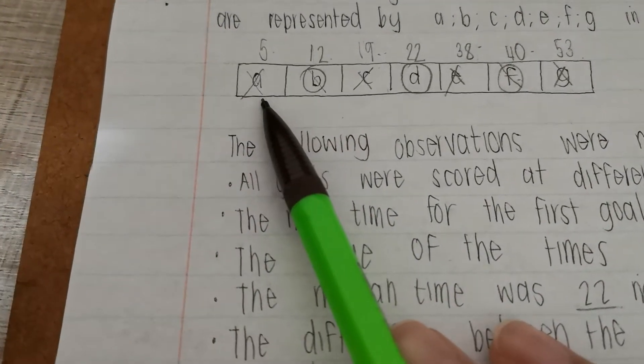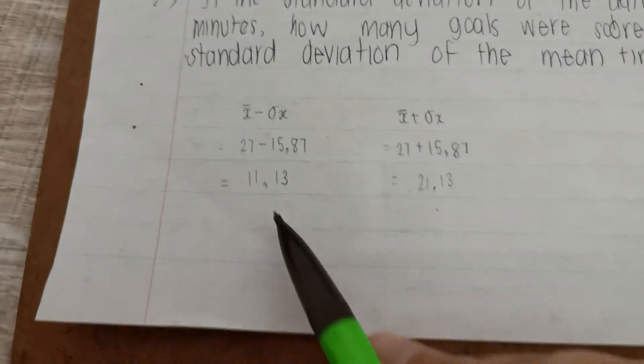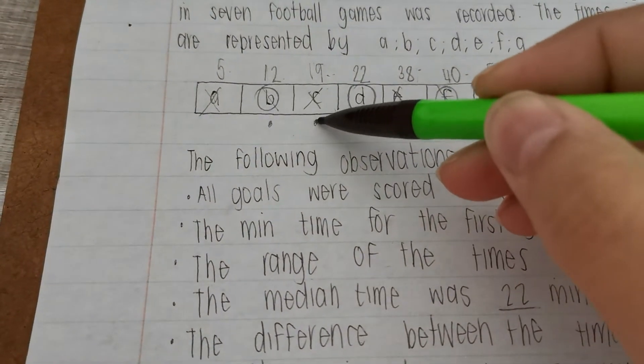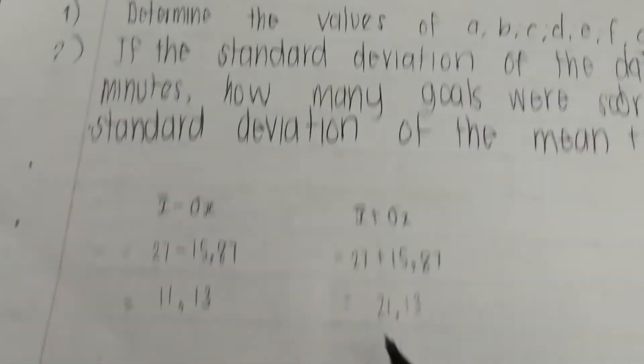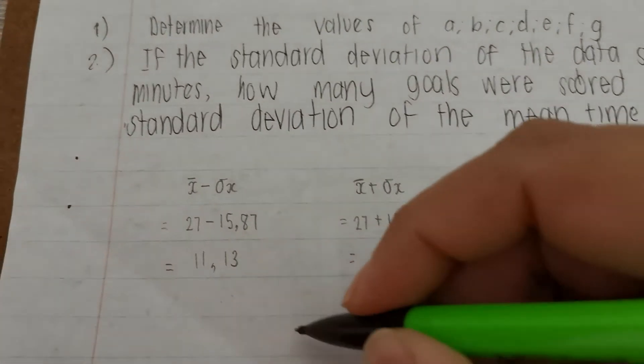So we're going to go between 11.13 and 42.87. Let's see. Does this number fit within it? No. Does this number fit within it? Yes. It fits within this and this. Does 19 fit? Yes. Does 22 fit? No, because it stops at 21.13. So now to answer our question. Two.